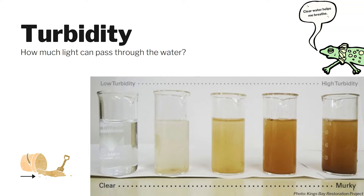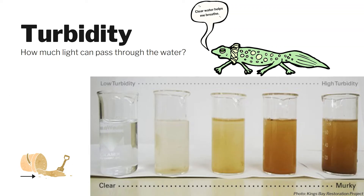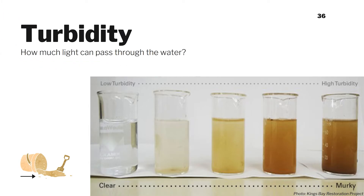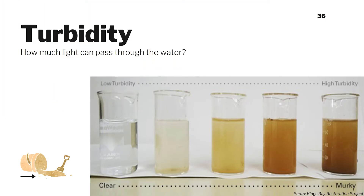So why does any of this matter? Turbid waters can clog the gills of aquatic organisms, reduce their resistance to disease, lower growth rates, and limit their ability to see or catch food. As solid particles settle, they can blanket the bottom of the stream and smother fish eggs and other critters living there. Turbidity can also increase water temperature, because suspended particles absorb more heat.